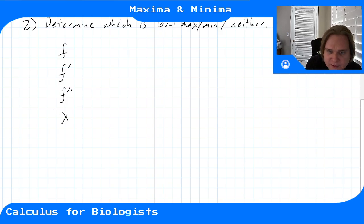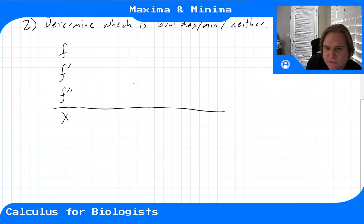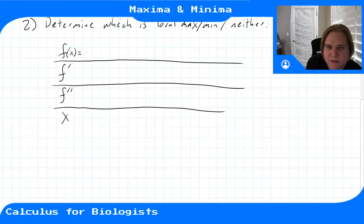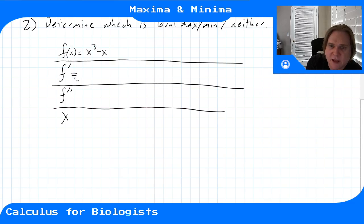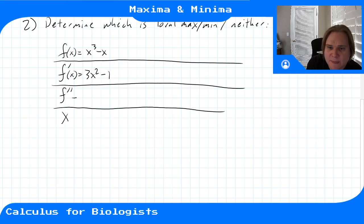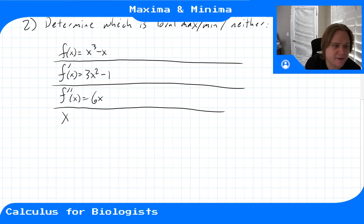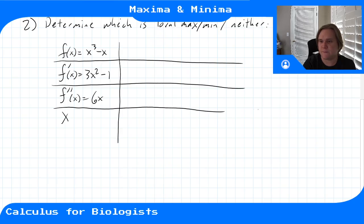In the table we have x, f(x) = x³ - x, f'(x) = 3x² - 1, and f''(x) = 6x. Our critical points are x = -√(1/3) and x = +√(1/3).